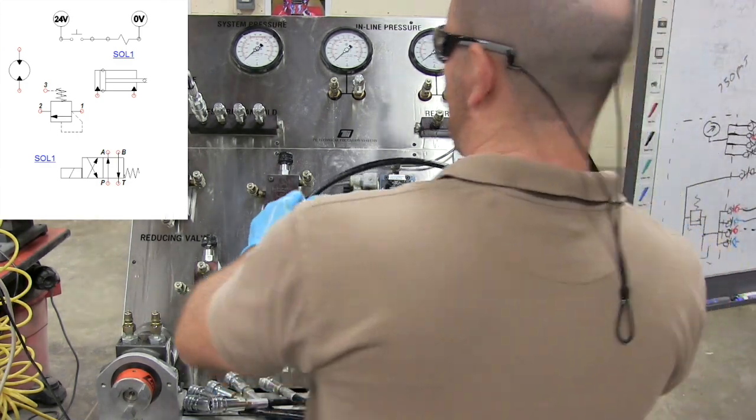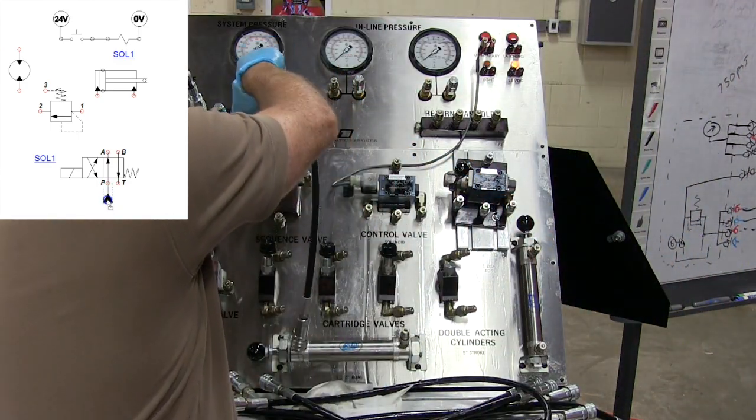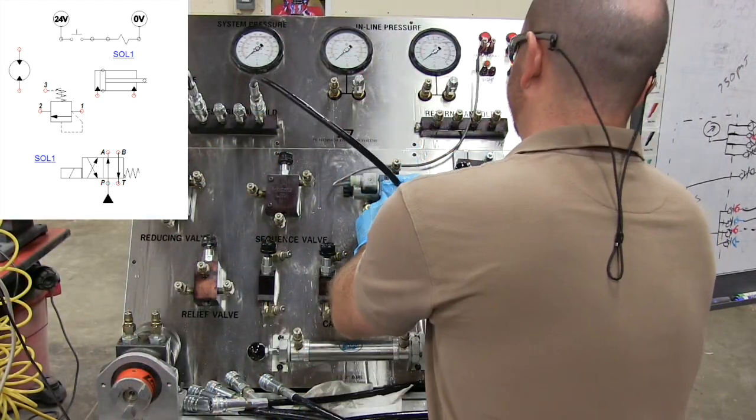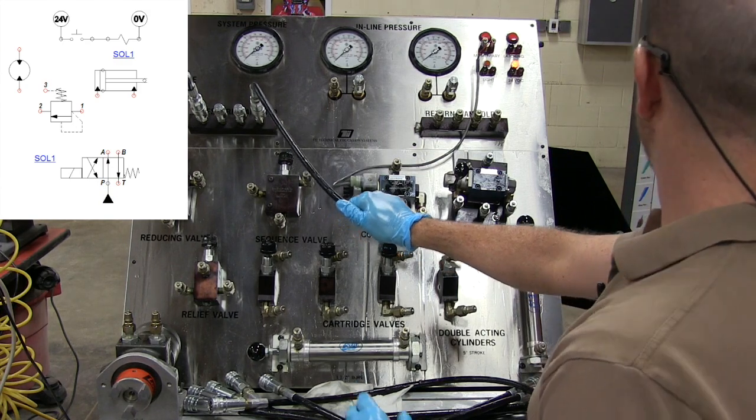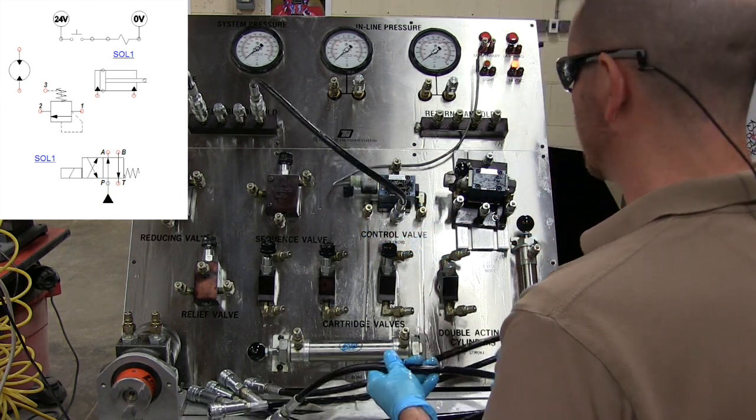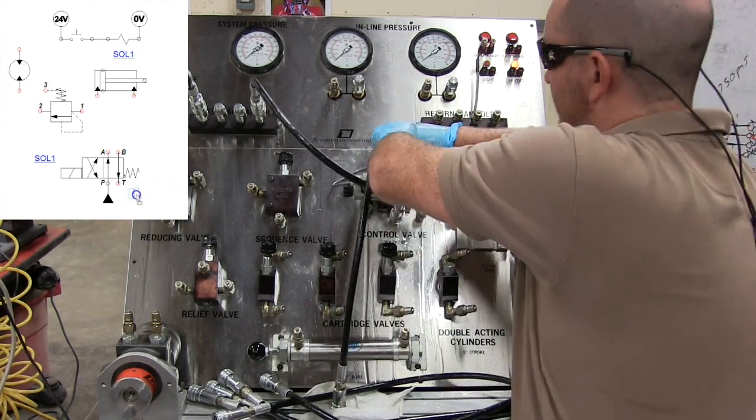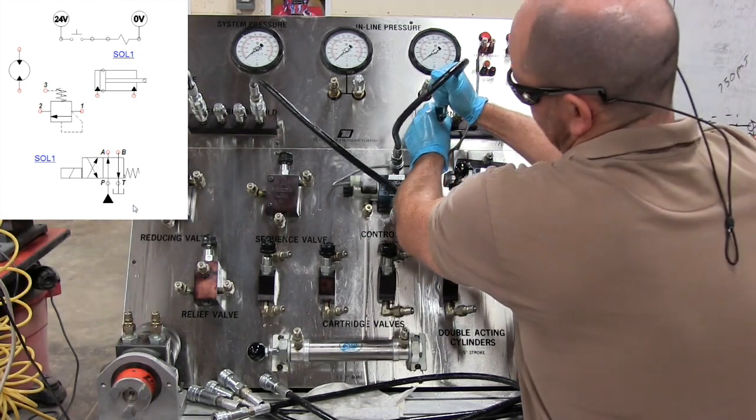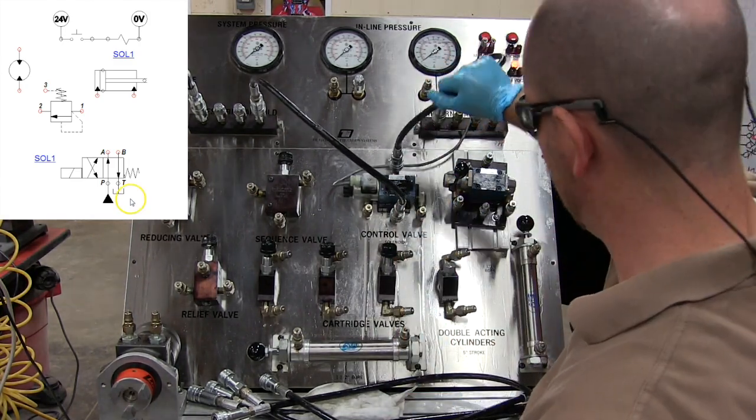So what we're going to do is come from our pump over to our directional control valve. Now we'll wait to hook up the sequence valve last just because we can get everything else out of the way. We're going to go from our T port to our return manifold. This will send the oil back to tank.